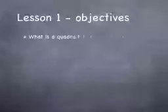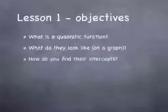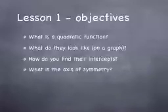The objectives in this first lesson: we're going to find out what is a quadratic function, what do they look like on a graph, how do you find their intercepts both x and y axes, and what is the axis of symmetry.